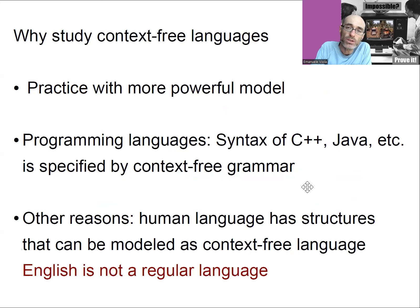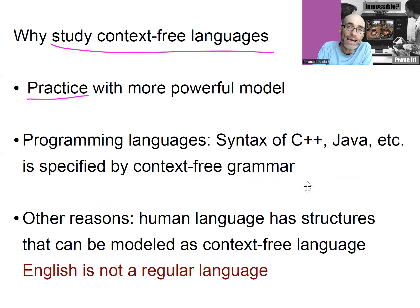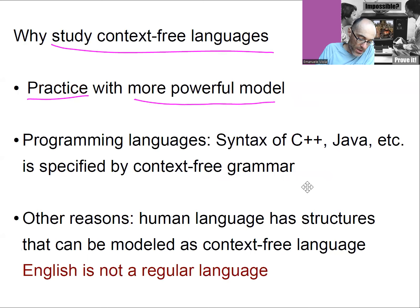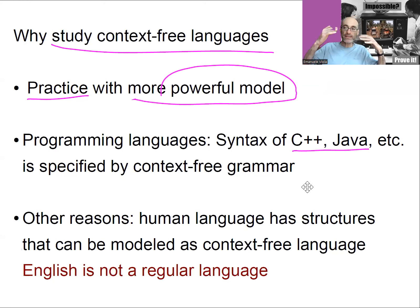So there was just one motivation, but why else are we studying context-free languages? We like to practice math. You can think of this also as a playground for developing mathematical maturity. We're going to practice with a more powerful model. Another reason, as I just mentioned, is that the syntax of many widespread programming languages, like C++, Java, and so on, is specified with a context-free grammar. It's a context-free language. So the compiler needs to understand the structure of what you program, and it does that with a context-free grammar. It could not do that with a DFA because the structure of programming languages cannot be captured by a DFA.